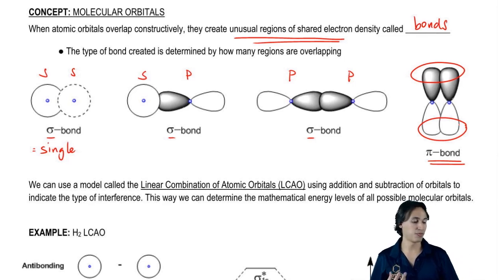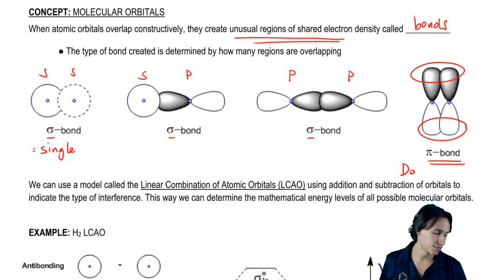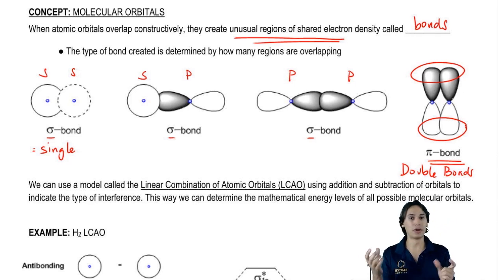Just so you know, pi bonds are found in double bonds. I'm going to clarify this in a bit. Pi bond and double bond are not the same exact thing, but what you should know is that a double bond has a pi bond in it.